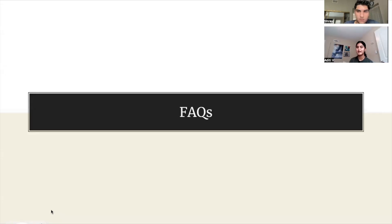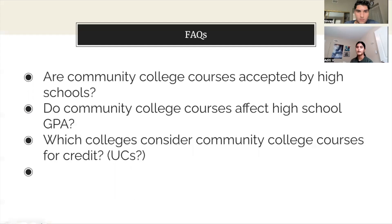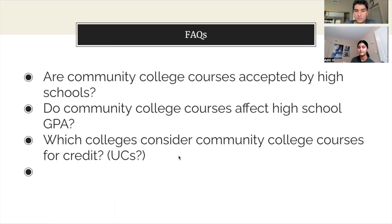Here are some frequently asked questions. Are community college courses accepted by high schools? Yes, but only through dual enrollment. Otherwise, if you're taking community college courses on the side, they can only end up as college credit. Do community college courses affect high school GPA? Community college courses only affect your high school GPA if you are taking them under dual enrollment. Otherwise, they have no effect on your high school GPA.